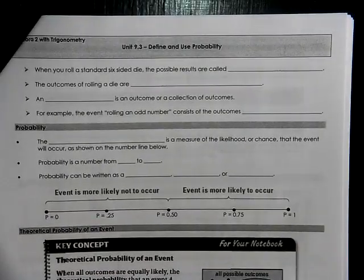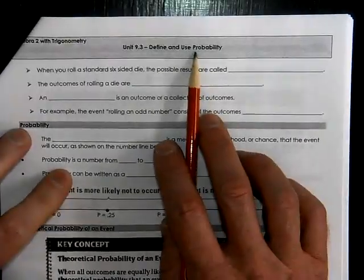This is Algebra 2 with Trigonometry, 9.3. We're going to talk about probability.